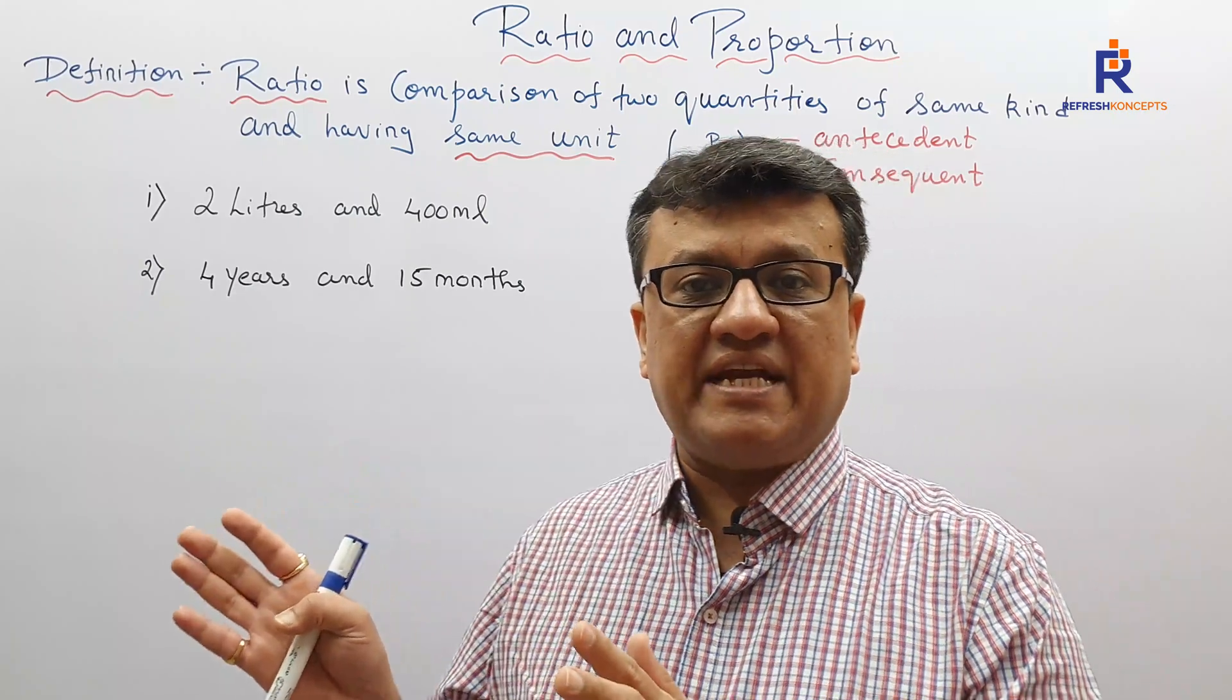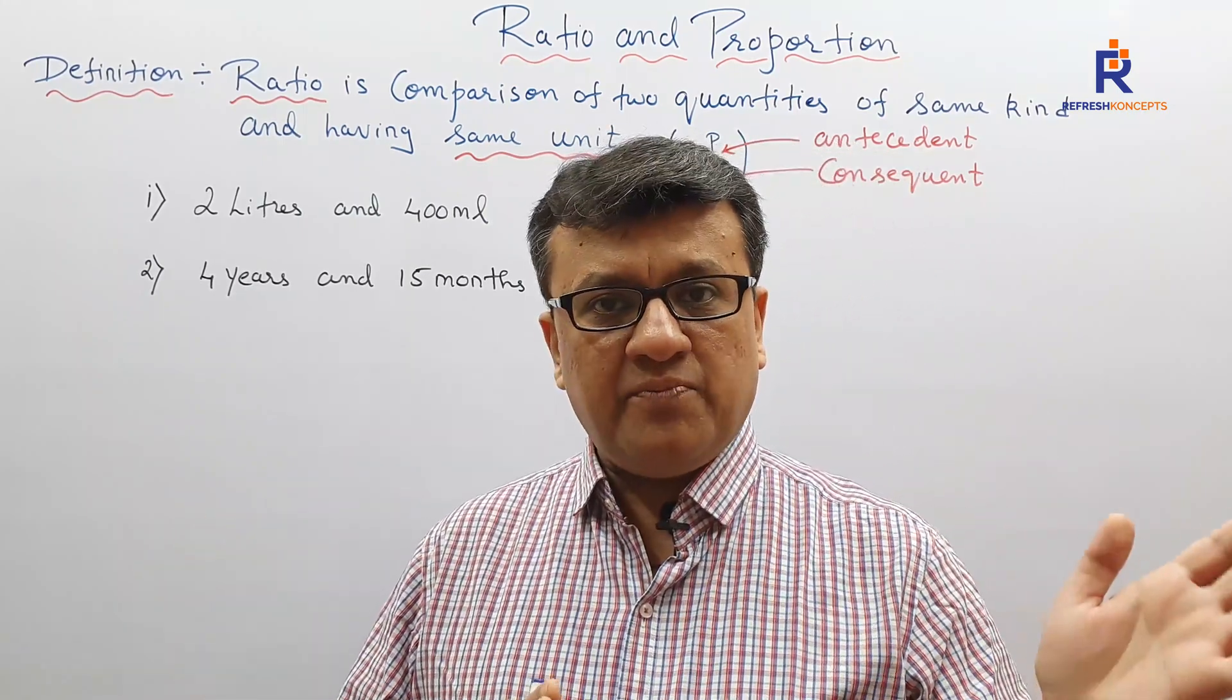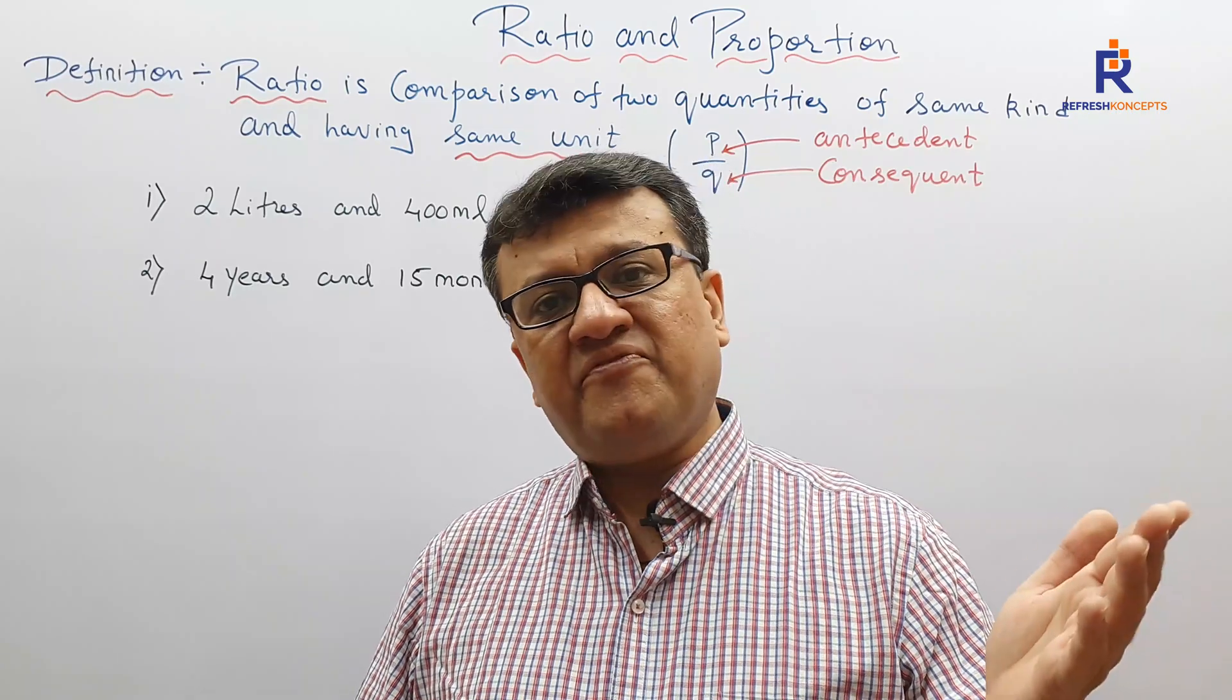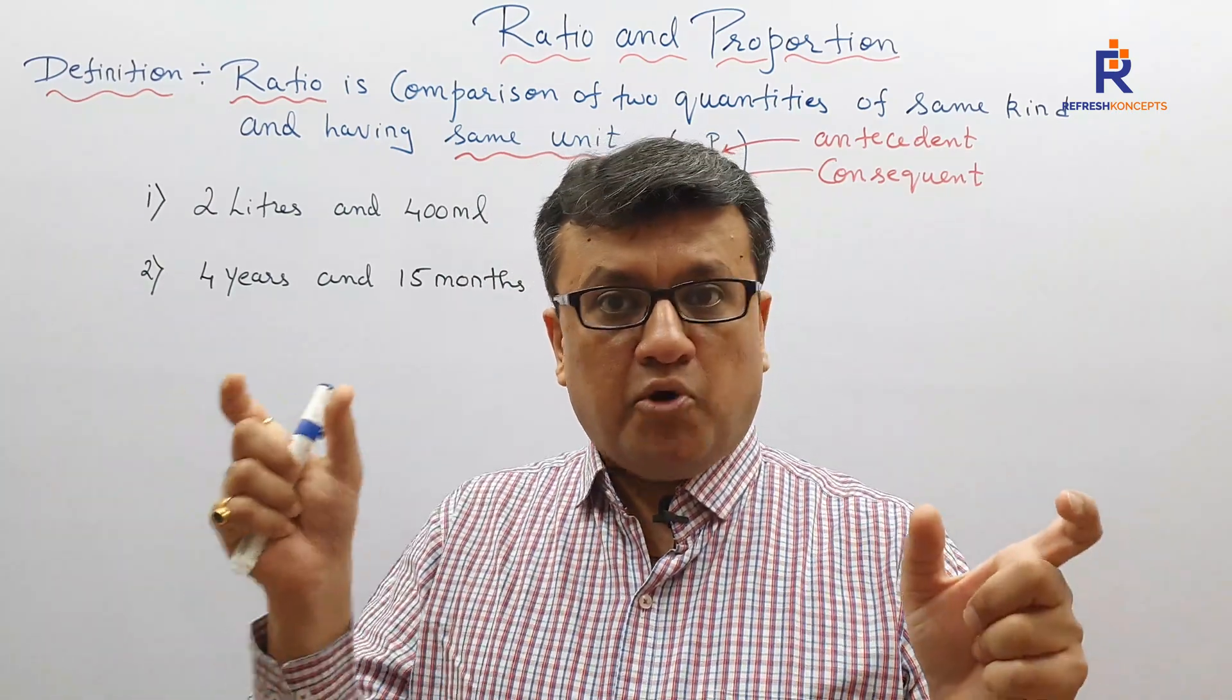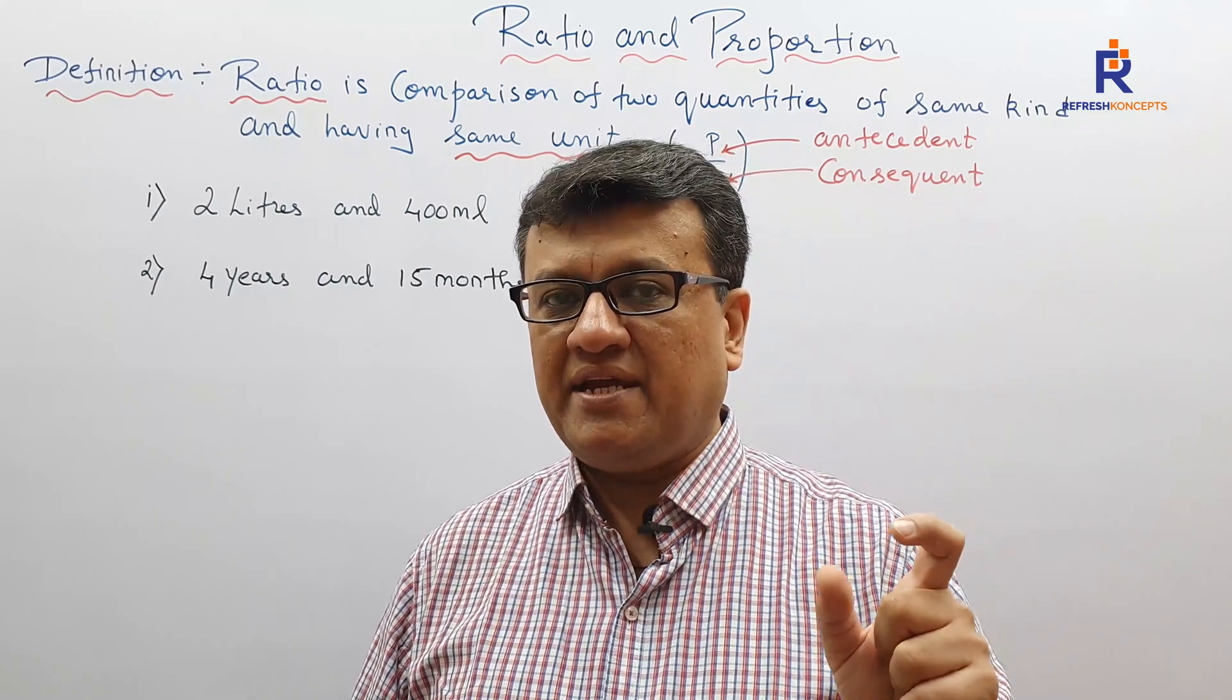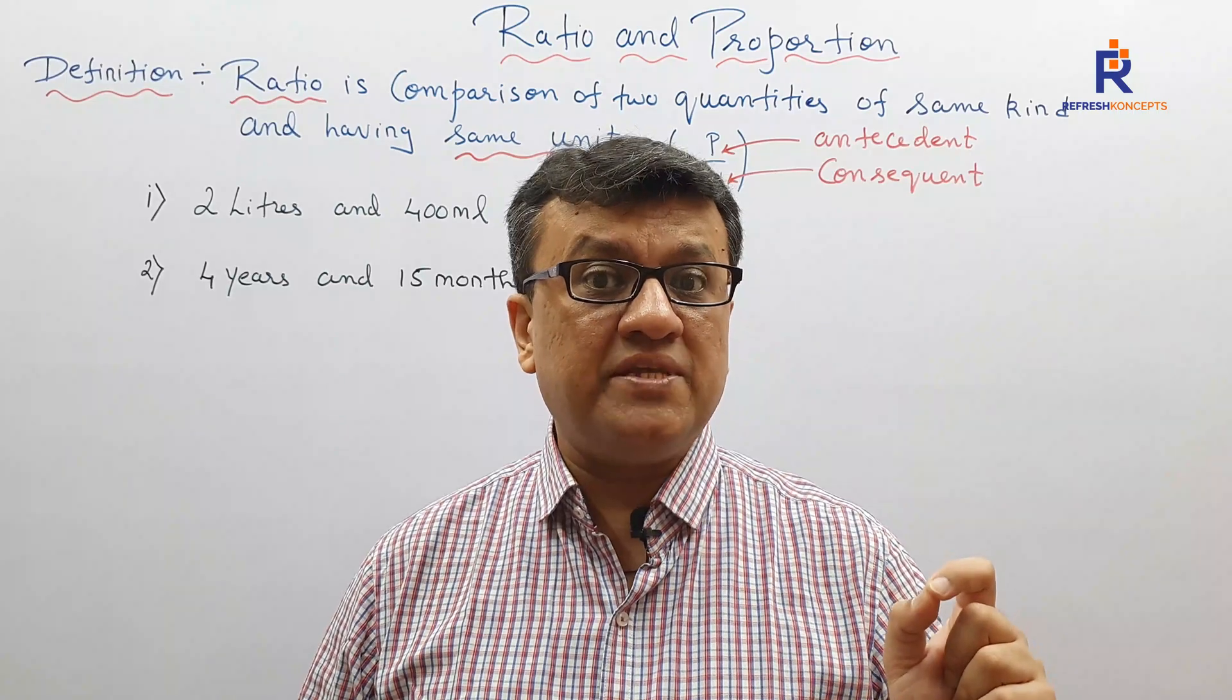Now here it is 100 rupees on the very first side and the second side it is 5 rupee 50 paise. So either I convert 5 rupee 50 paise into rupees, which is 5.5 rupees, or I convert 5 rupee 50 paise into paise and 100 rupees also into paise. So both the time it should be either in paise or it should be in rupees. I cannot compare in different units. The units has to be the same.